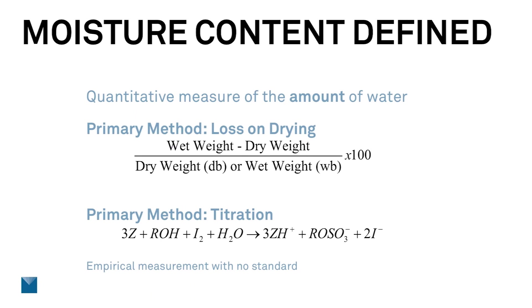Another primary method is titration, also known as Karl Fischer. This is a chemical reaction where you react water, iodine, and some solvents. The reaction continues until all of the water is used up, at which point the electrical conductivity changes in the solution. The conductivity is measured and then used to calculate the percent moisture content. There are potential problems with this method though: all of the water needs to be solubilized and available to react, which can be difficult if your product is not a liquid. You need to know which solvent to use, and there can be side reactions happening with the solvents that can affect the measurement.